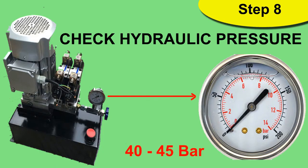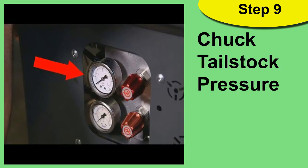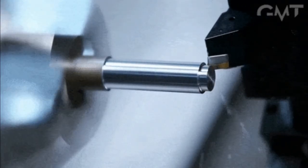In Step 8, our machine is ready to work but we still have to check some points. Check the hydraulic pressure — it should be about 40 to 45 bar. In Step 9, check the lubrication and coolant level and pressure — it should be at the green level. Also check the chuck pressure and tailstock pressure. Chuck pressure should be about 8 to 25 bar and tailstock pressure should be about 8 to 16 bar.